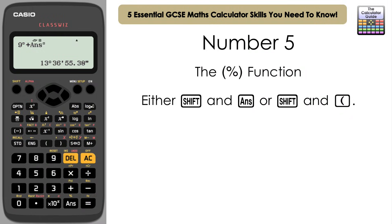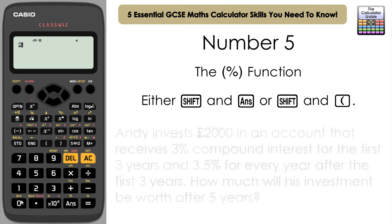The fifth essential skill is the percentage button. Say we wanted to quickly work out 3 over 8 as a percentage. Input 3 over 8, and before pressing equals, put a percentage symbol next to the denominator. On the ClassWiz it's Shift and ANS; on the previous generation it's Shift and left bracket. Press equals and it gives us 37.5%. We can also use it with compound interest questions.